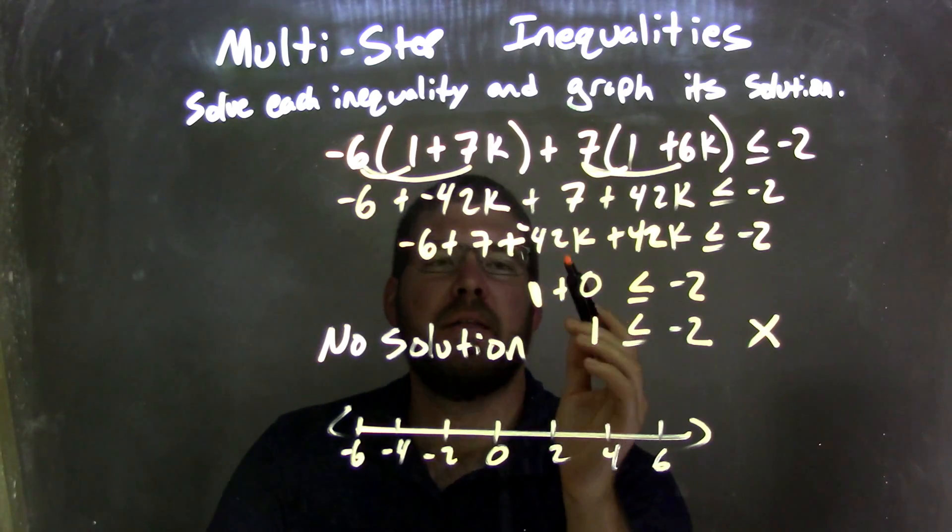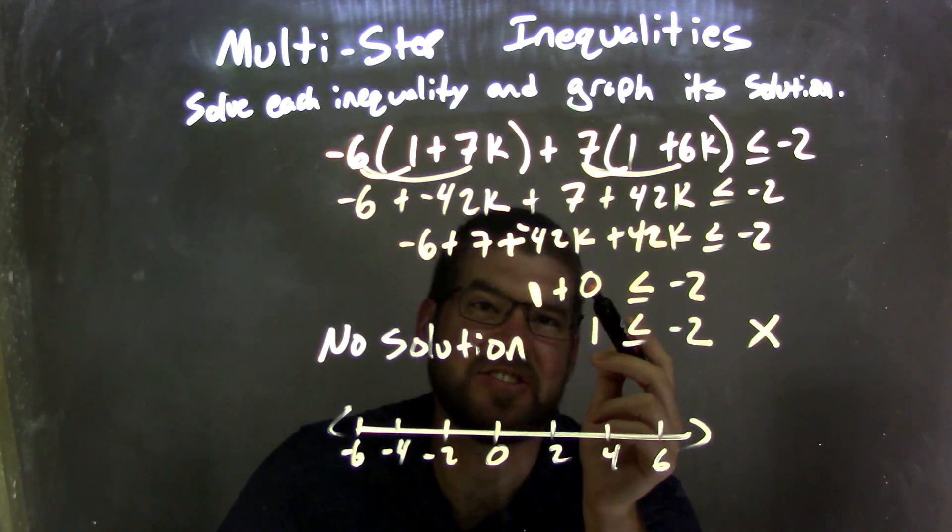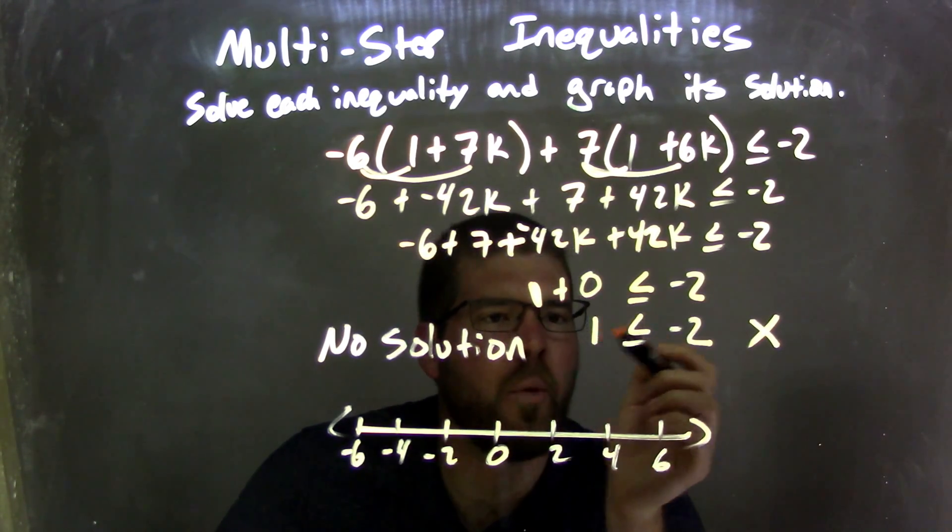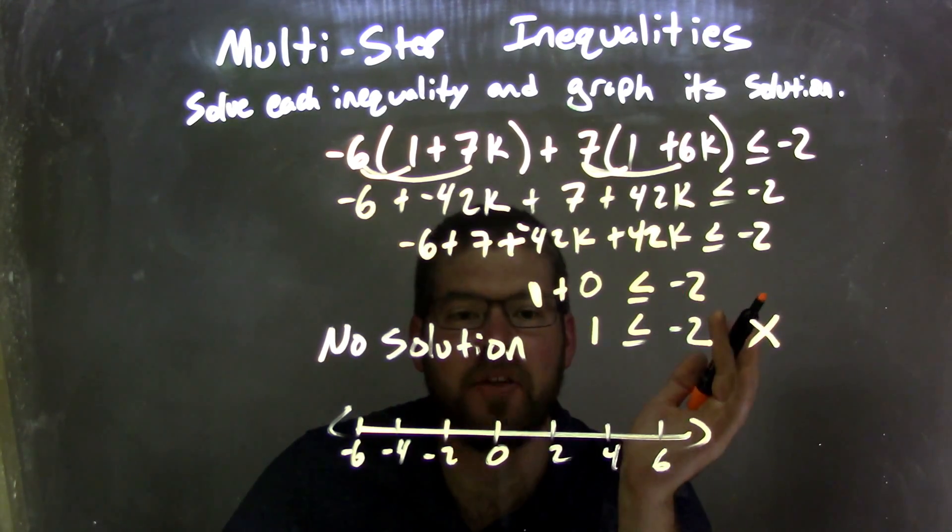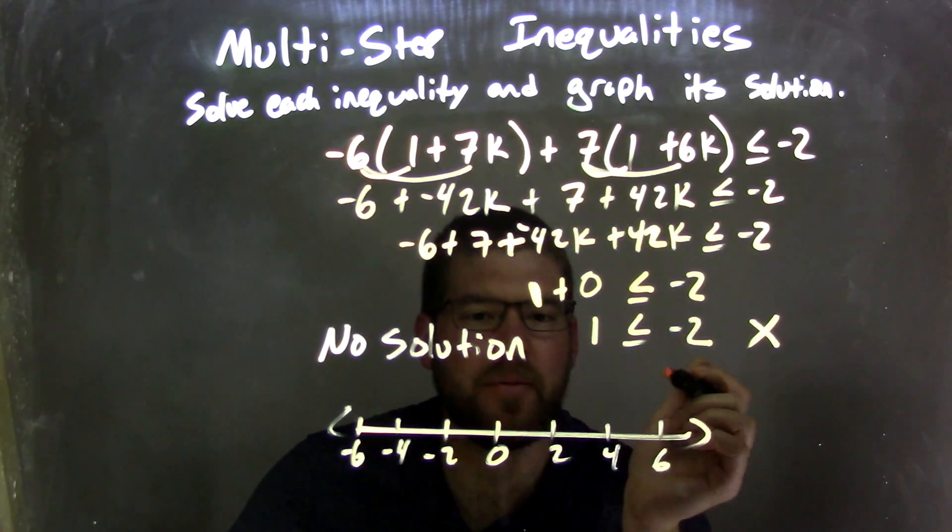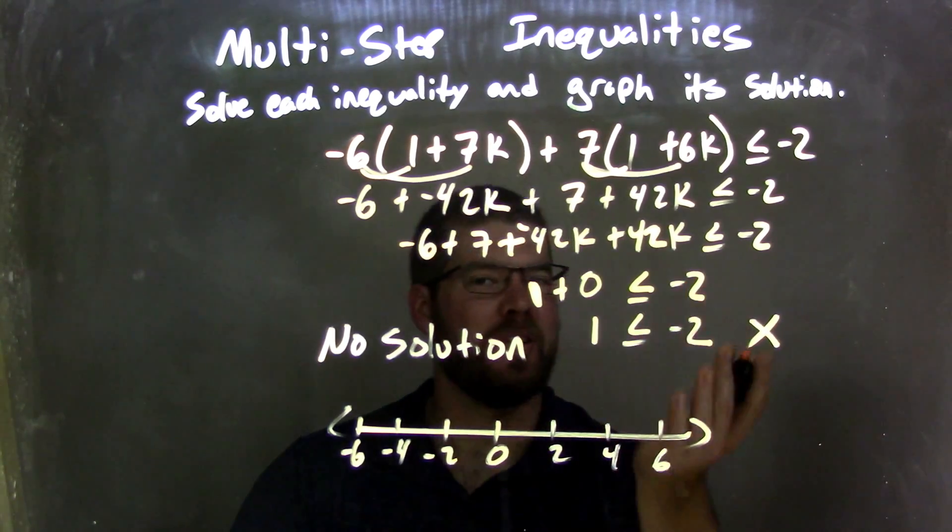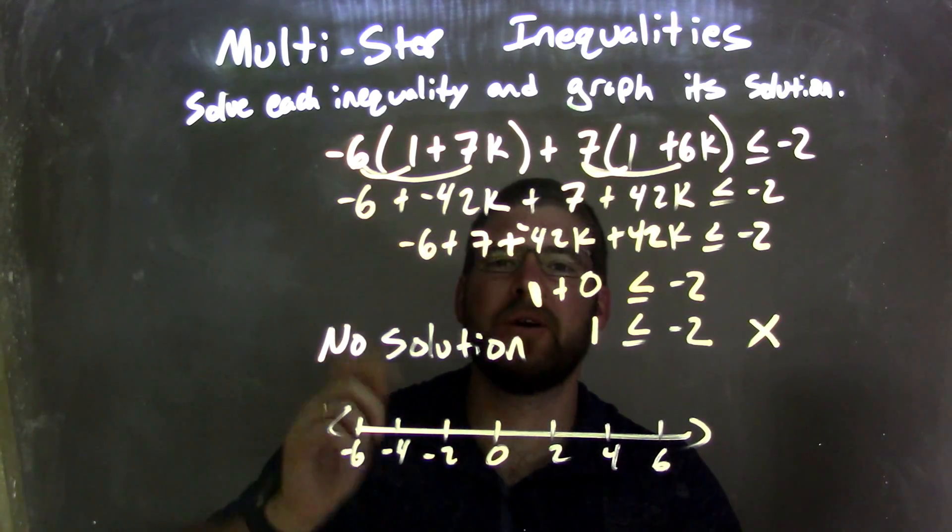I rearranged and then combined my like terms. Well, negative 42k plus positive 42k is just 0, and negative 6 plus 7 is positive 1, and then 1 plus 0 is 1. So 1 is less than or equal to negative 2. Is that a true statement? No, it's not. So this is not a true statement. We have no graph that we can graph here, and our answer is actually no solution. So now our graph here, which is nothing, matches our answer, which is no solution.